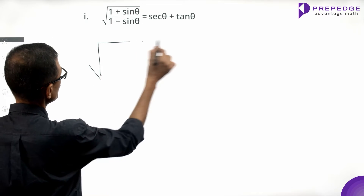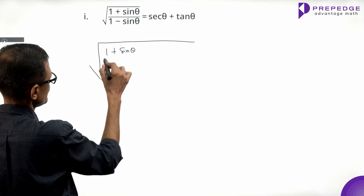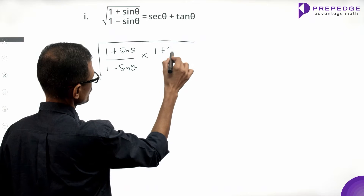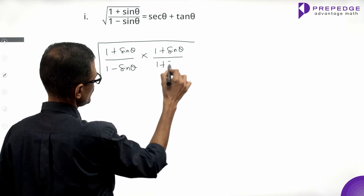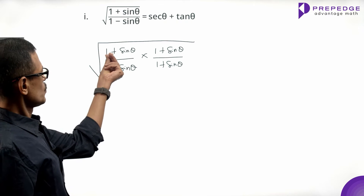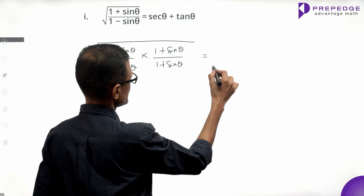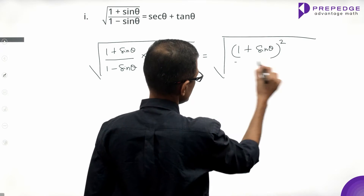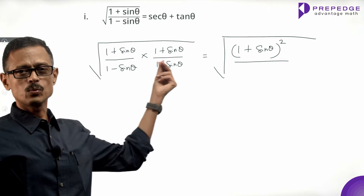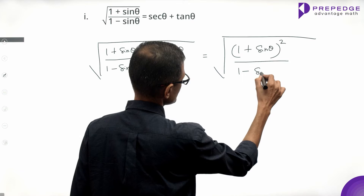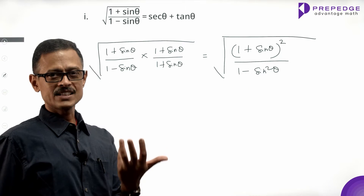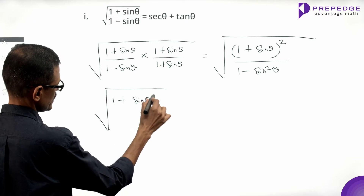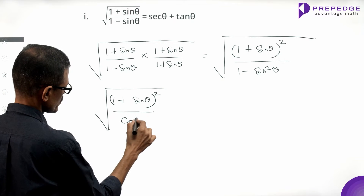We have the square root of (1 plus sin theta) divided by (1 minus sin theta). We multiply and divide by (1 plus sin theta) over (1 plus sin theta). The numerator becomes (1 plus sin theta) the whole square. The denominator is (1 minus sin theta) into (1 plus sin theta), which equals 1 minus sin squared theta, and that equals cos squared theta. So we have (1 plus sin theta) whole squared divided by cos squared theta.